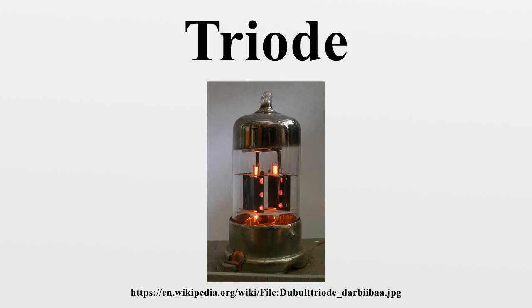History. The first vacuum tube, the diode or Fleming valve, which had two electrodes — a filament and a plate — was invented by John Ambrose Fleming in 1904 as a radio receiver detector.